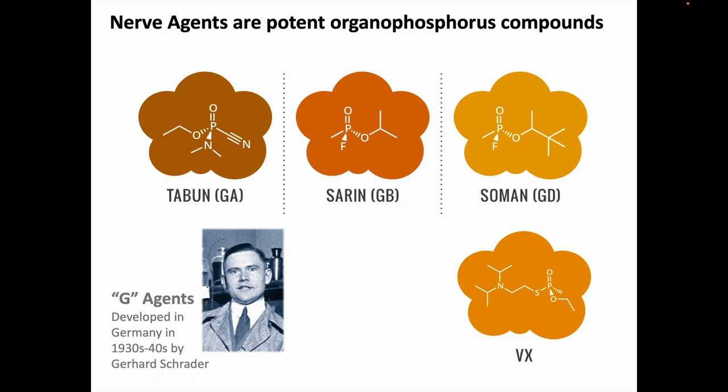As the Allies were liberating Europe, they discovered these nerve agents in the same order and designated them GA for German Agent A, then GB, and then GD. They skipped GC because GC was already being used as the designation for gonococcus, the bacterium causing gonorrhea. Shortly after the war, the British and Americans developed the even more potent VX, and it's believed the letter V stands for venom or venomous.